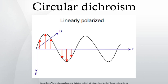This phenomenon was discovered by Jean-Baptiste Biot, Augustin Fresnel, and Aimé Cotton in the first half of the nineteenth century. It is exhibited in the absorption bands of optically active chiral molecules.